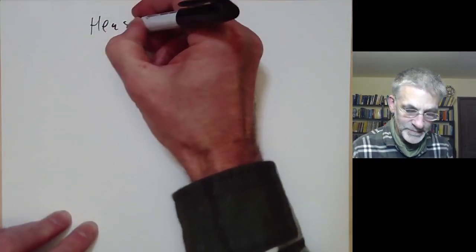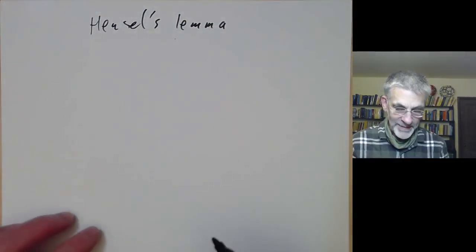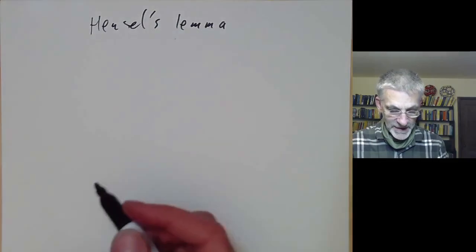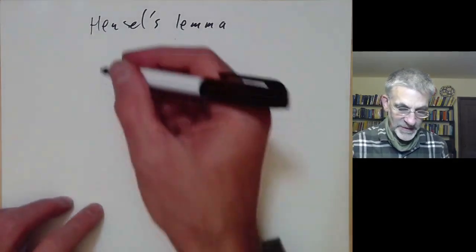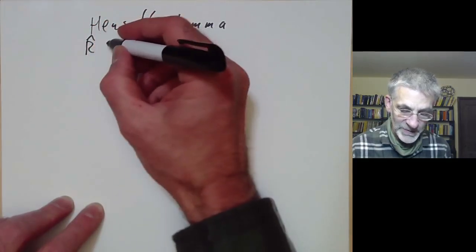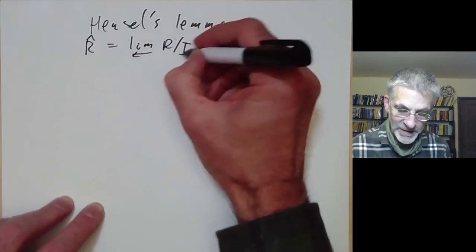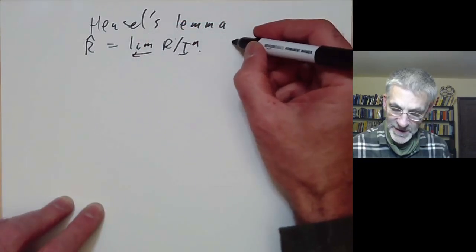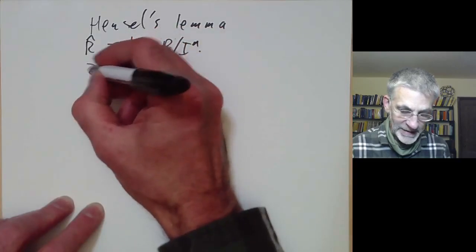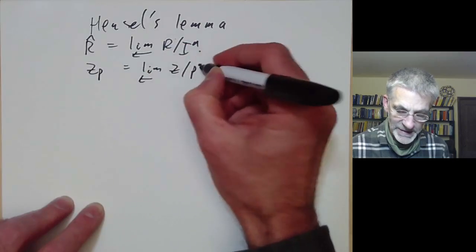This talk is part of an online commutative algebra course and will be about Hensel's lemma. Hensel's lemma is about how to find solutions of equations over completions of rings. Last lecture we defined the completion of a ring with respect to an ideal i to be the inverse limit of all the quotients r over i to the n. A typical example is the p-adic numbers, which is the inverse limit of Z modulo p to the n times Z.